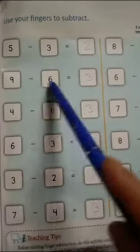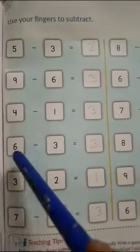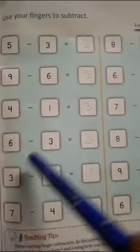5 minus 3, 2. 9 minus 6, 3. 4 minus 1, 3. 6 minus 3, 3. 2. 1. 7 minus 4, 3.